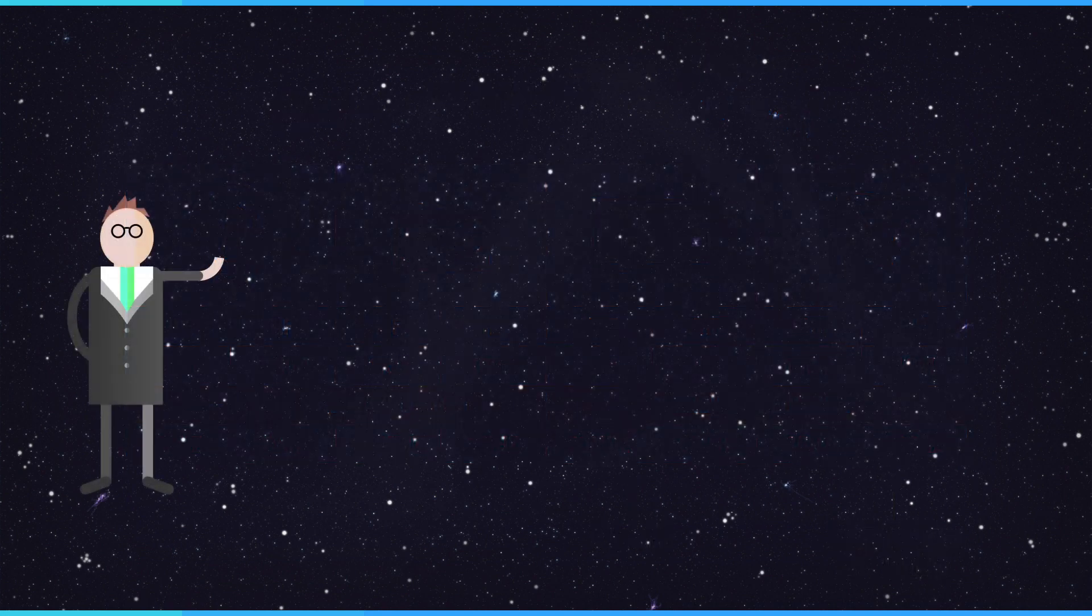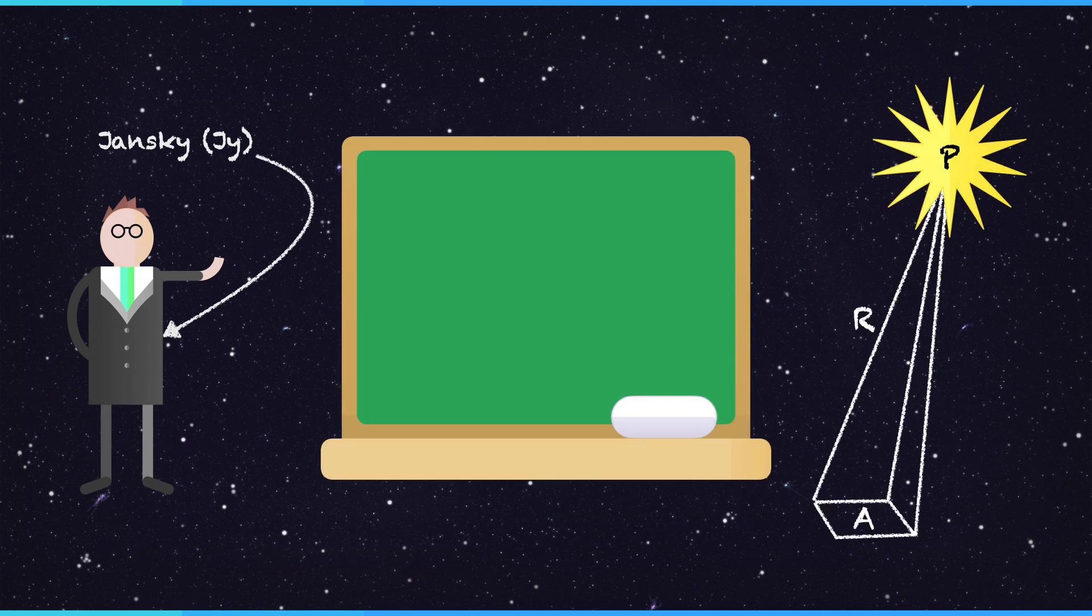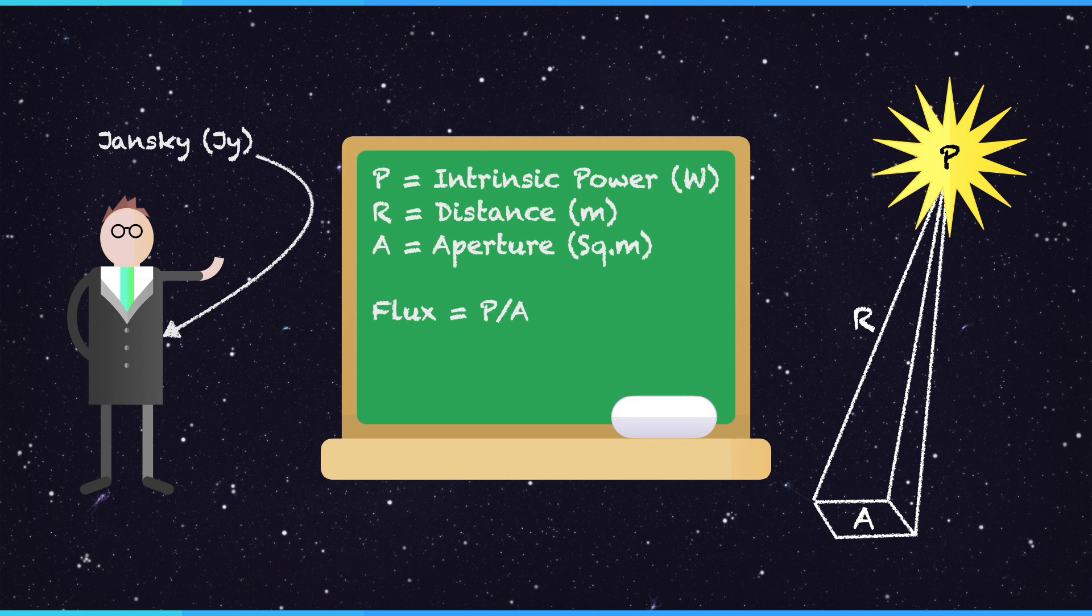By the way, Karl Jansky is remembered for the unit of Jansky. This is the flux density measured across the strength of a signal, and measured in watts per square metre per hertz. Or simply known as a Jansky. We'll be coming back to this a bit later.